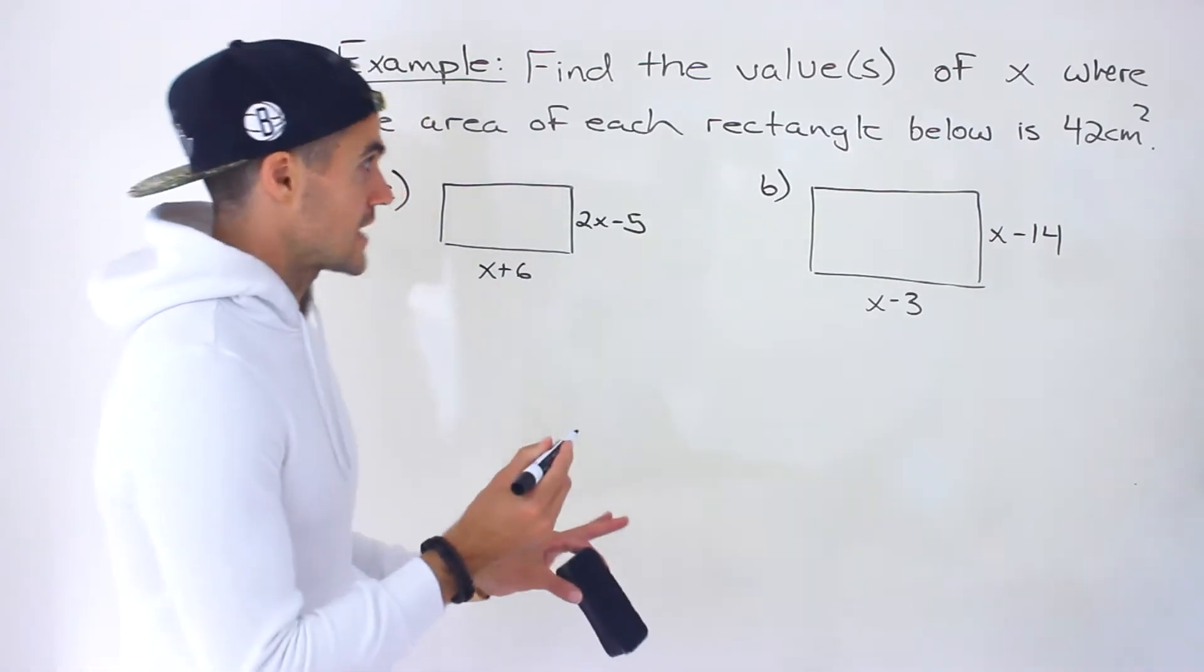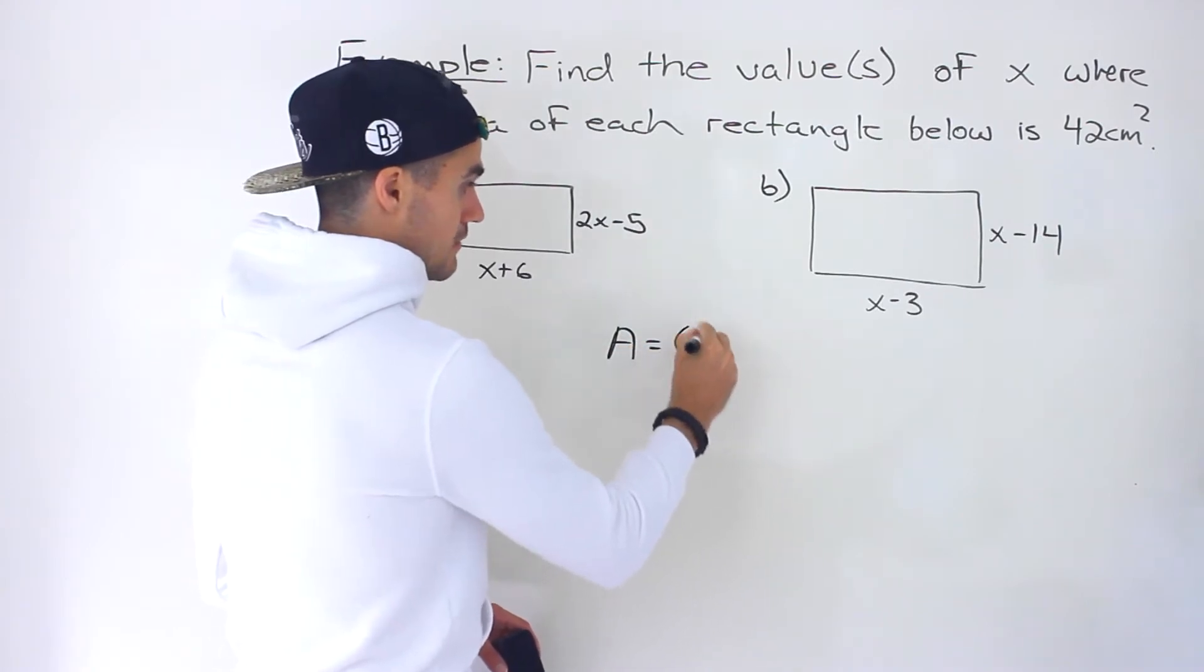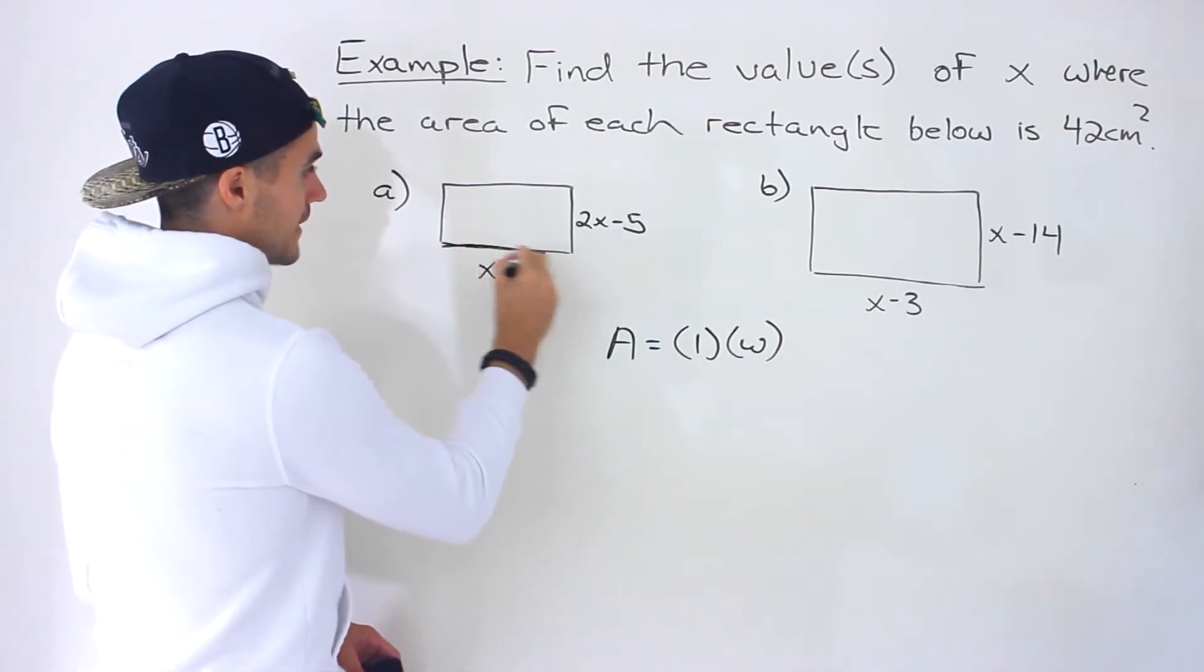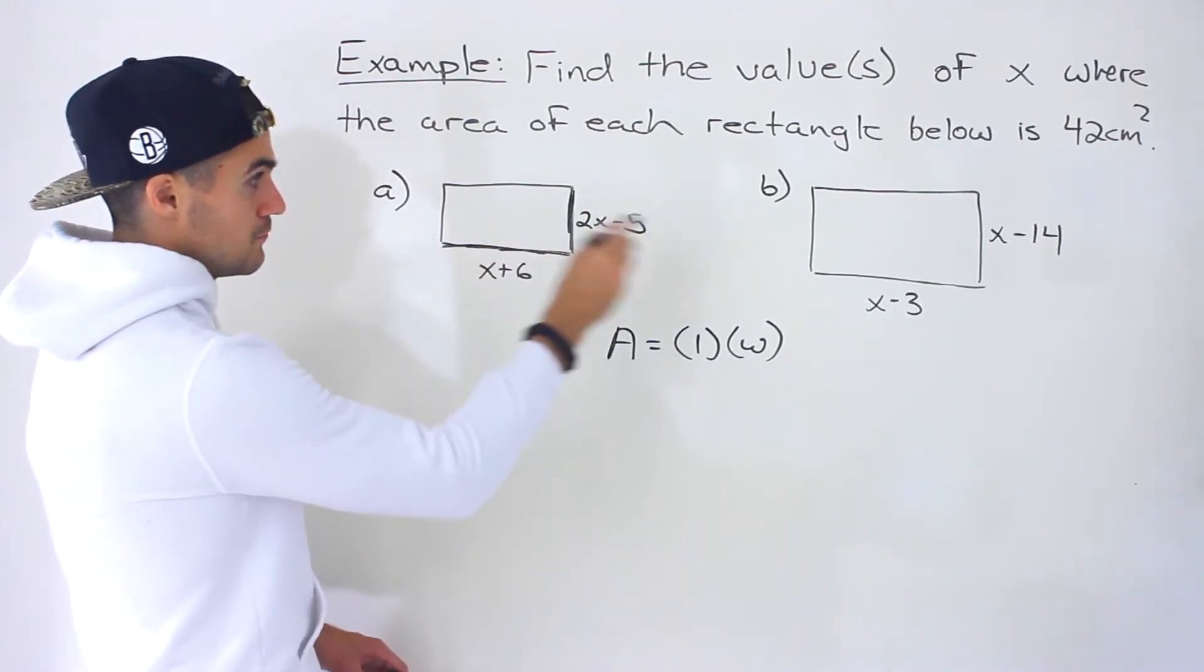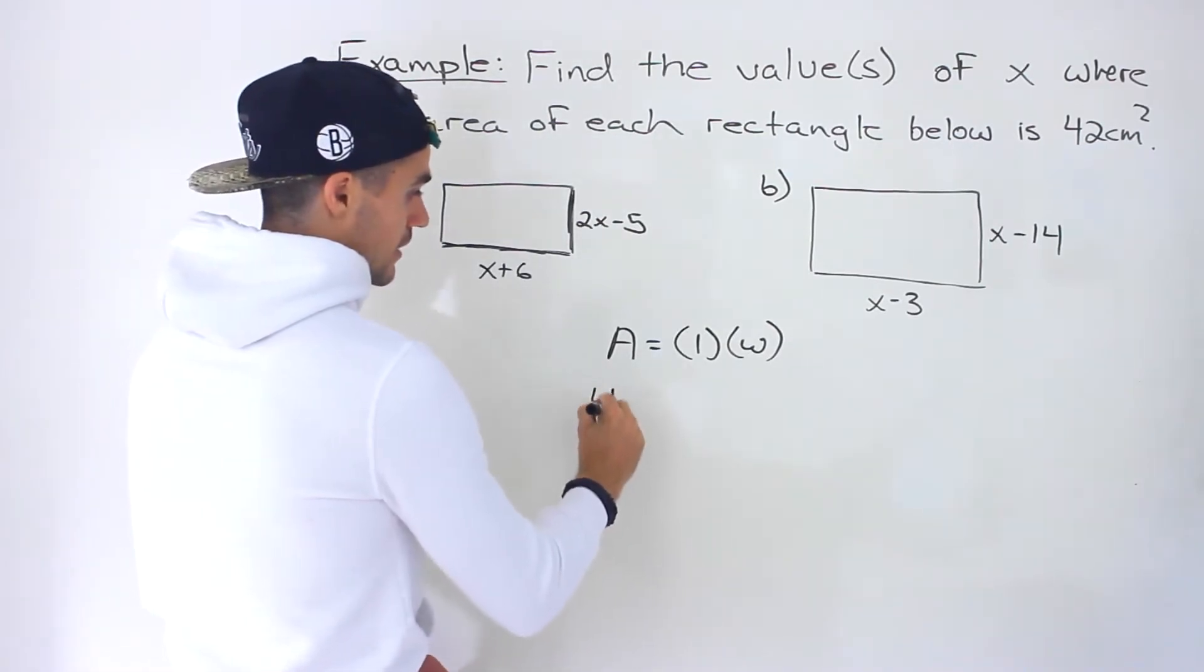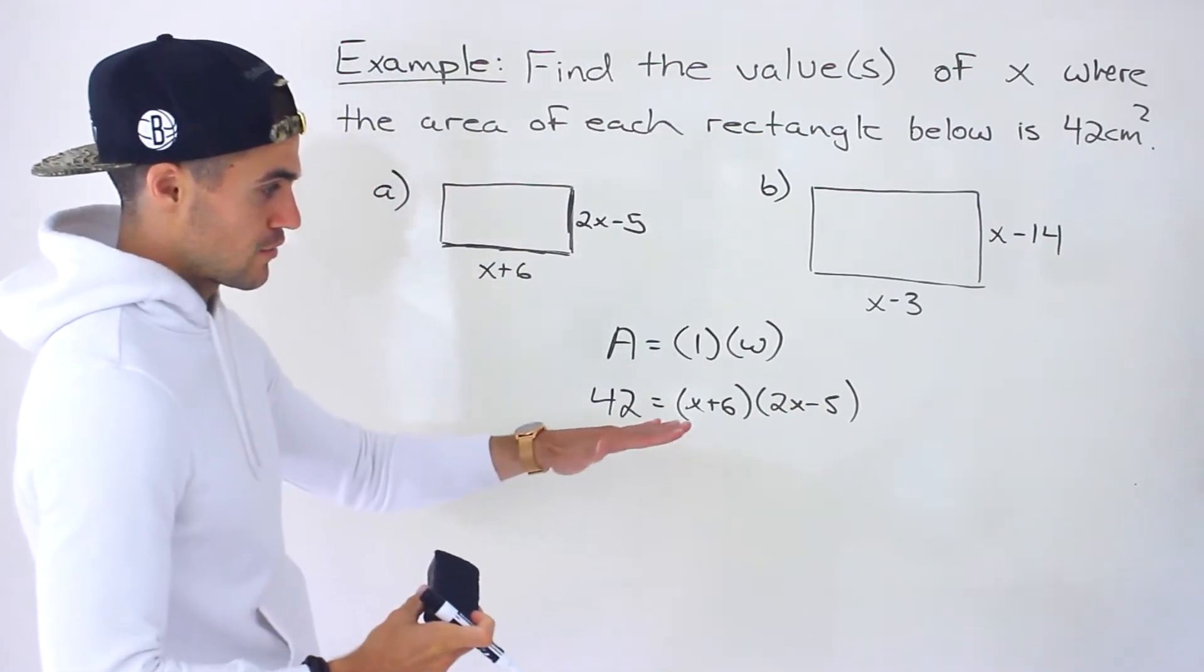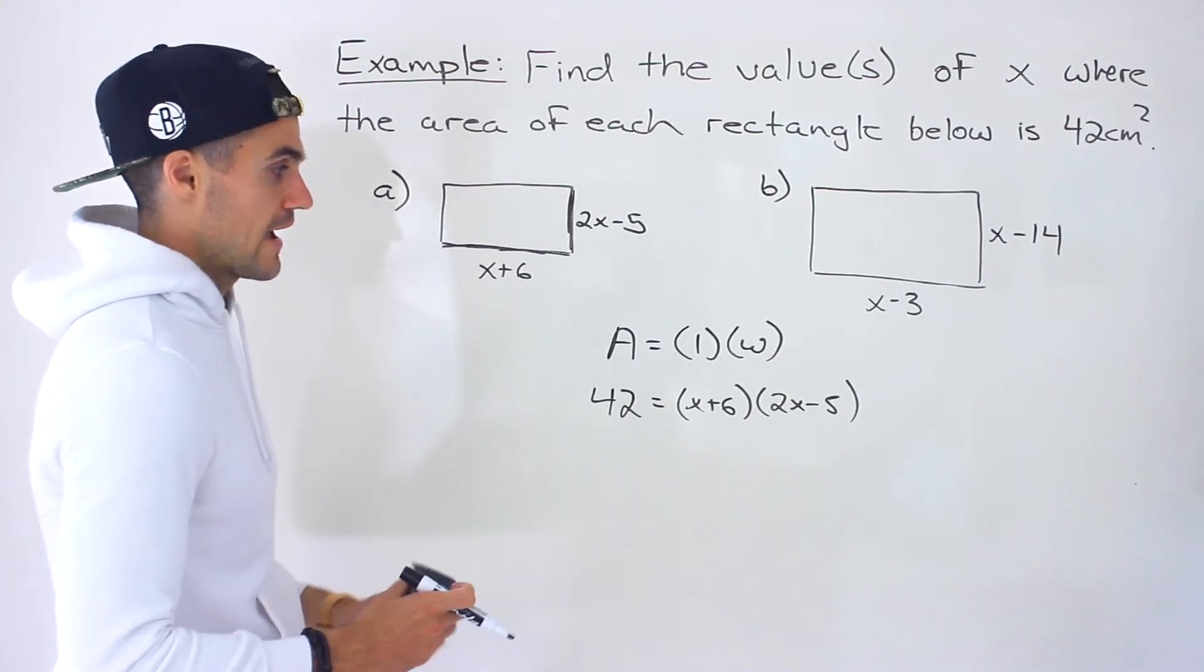So we're dealing with rectangles. We're dealing with area and just as a quick review we know that area is equal to length times width, just in general for a rectangle. And so starting with this first one notice that we have a length here of x plus 6. We have a width of 2x minus 5 and we know that the area of both of these rectangles has to be 42. So we could plug everything in. So the area is 42. The length is x plus 6 and then the width is 2x minus 5. And then notice we end up with an equation over here with one variable to solve for the x value.